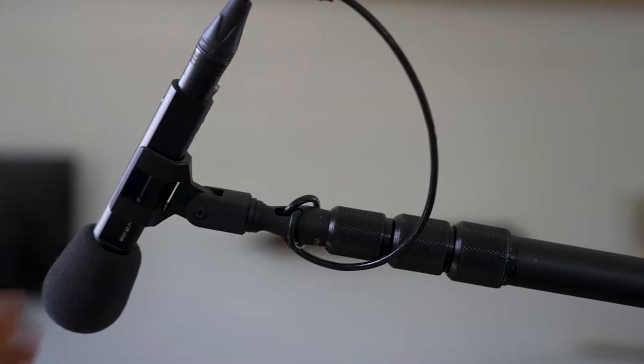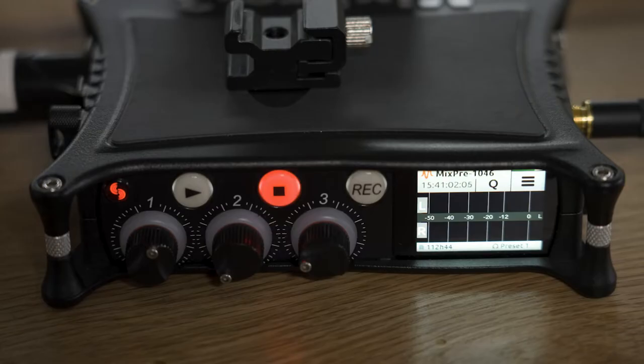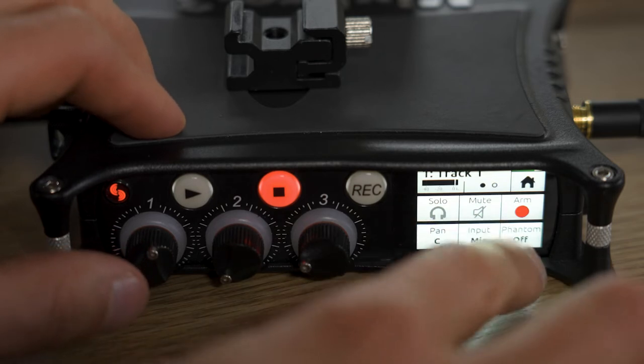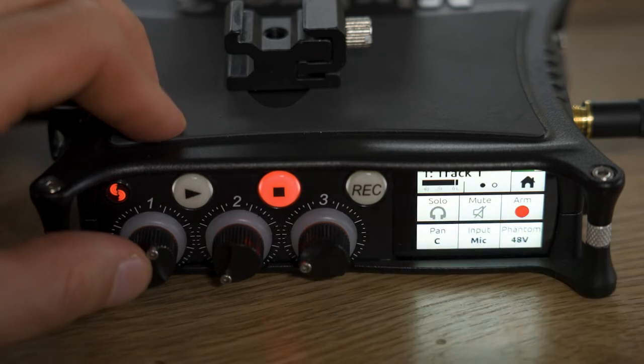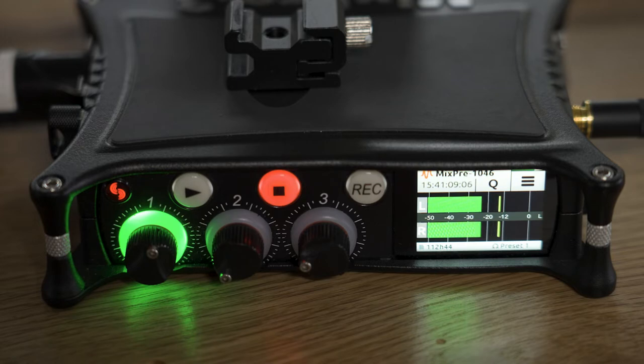We then connect the microphone to the audio mixer using an XLR cable. Like most film mics, our mic requires phantom power to work. So we make sure that setting is turned on in our mixer.